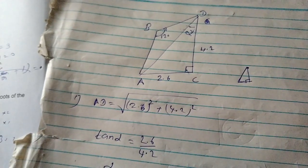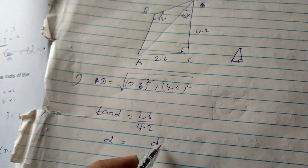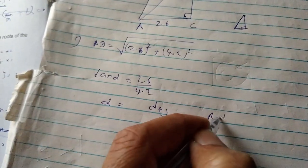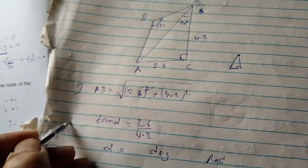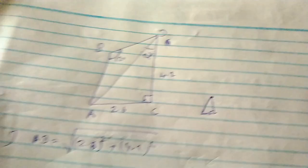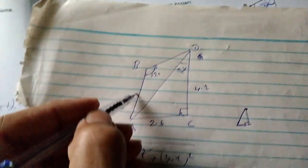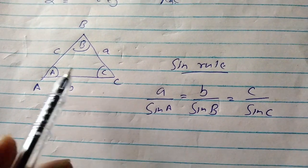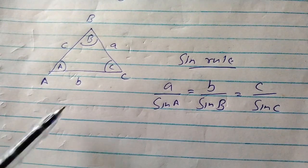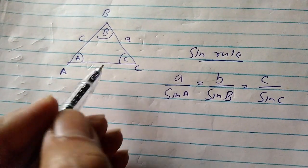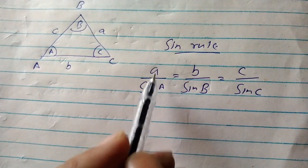We can use the radius to determine the distance between point A and B. Here, the distance is from A to B — how to determine the distance using the given values.